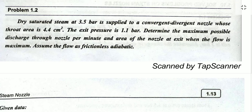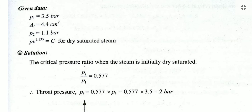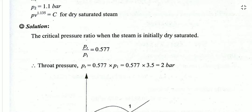Second problem: dry saturated steam (dryness fraction X = 1) at 3.5 bar is supplied to a convergent-divergent nozzle with throat sectional area 4.4 cm² and exit pressure 1.1 bar. Determine the maximum possible discharge and exit area. The flow is frictionless and adiabatic. For dry saturated steam, the critical pressure ratio gives Pt/P1 = 0.577, so the throat pressure Pt = 0.577 × 3.5 ≈ 2 bar.